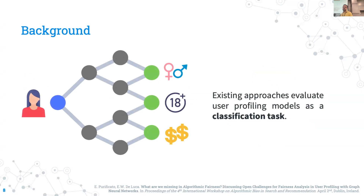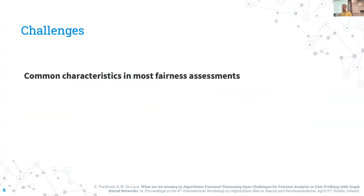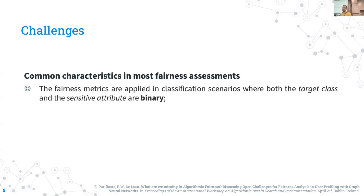Here is where the problems come, because when we try to analyze and assess fairness in this context, in modern literature we are facing two challenges. The first challenge is that fairness methods are applied in classification scenarios where both the target class and the sensitive attribute are binary.